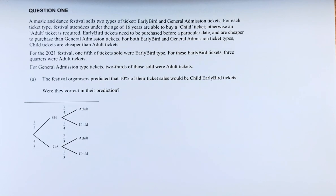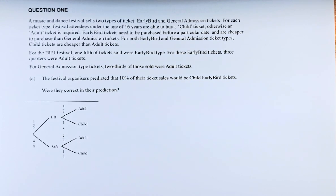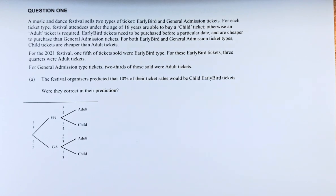A music and dance festival sells two types of tickets: early bird as well as general admission tickets. For each ticket type, festival attendees under the age of 16 years are able to buy a child ticket; otherwise, an adult ticket is required. Early bird tickets need to be purchased before a particular date and are cheaper to purchase than general admission tickets. For both early bird and general admission tickets, child tickets are cheaper than the adult tickets.